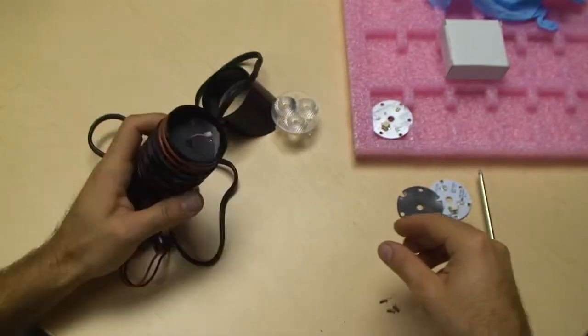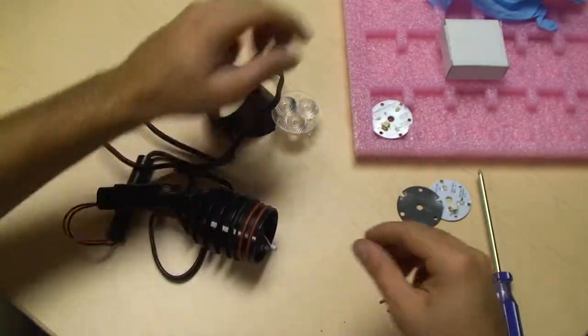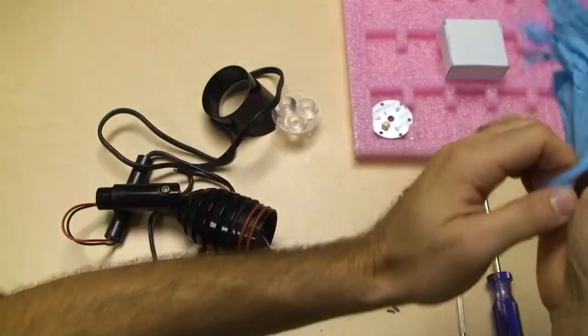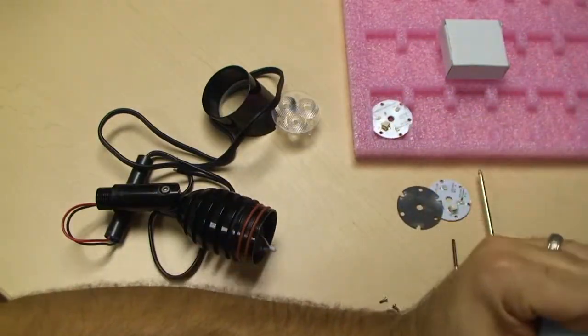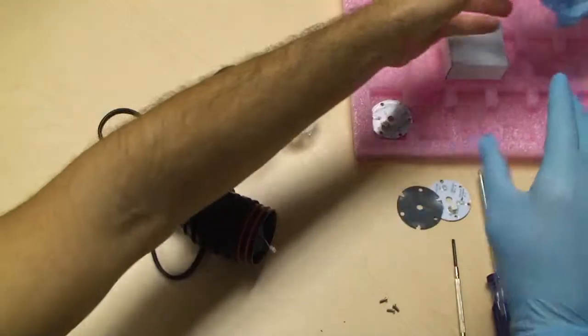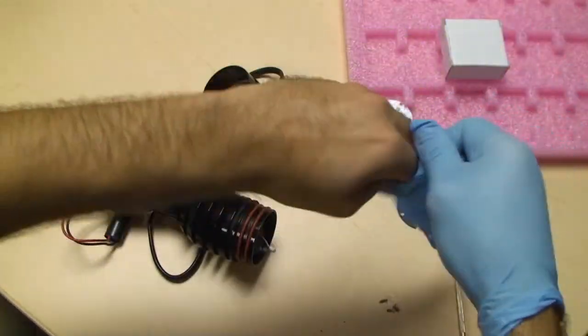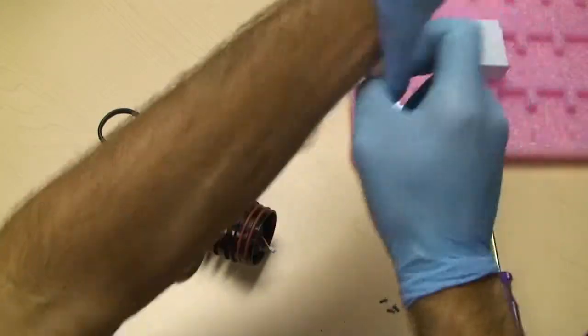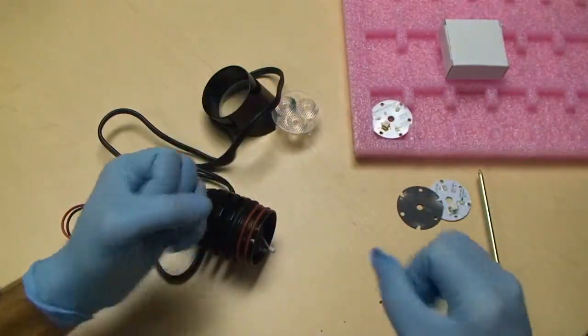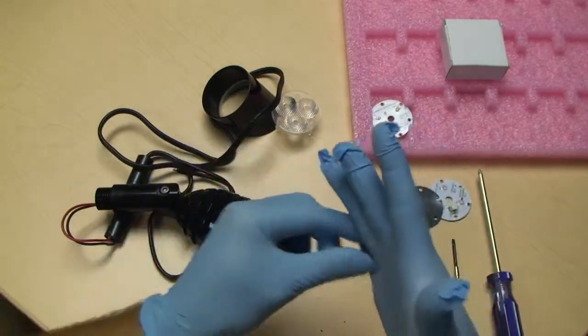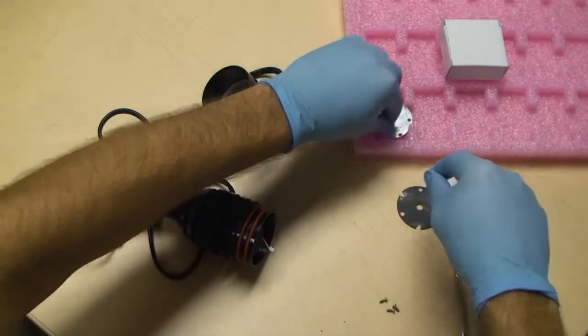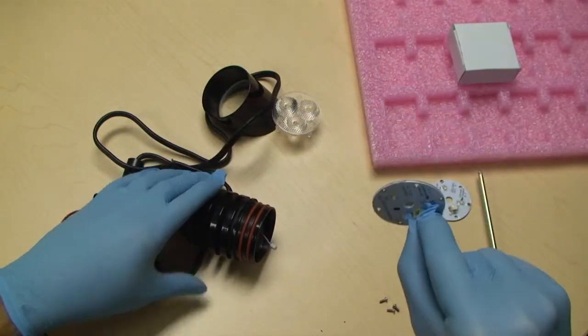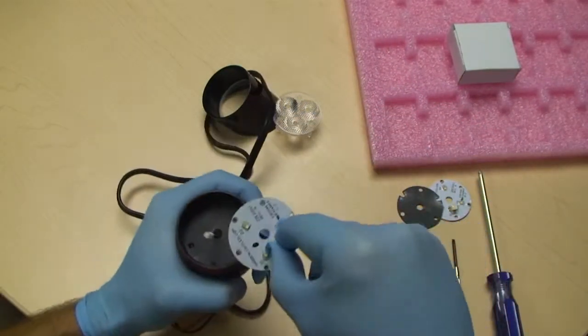Step 11. Put on your ESD safe gloves that were included in your LED board replacement kit. Carefully pick up the new LED board, making sure to hold it by the connector and lower it into place while aligning the holes correctly.